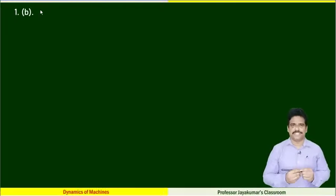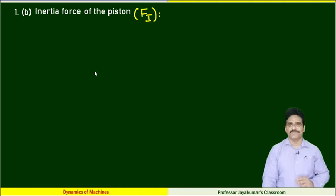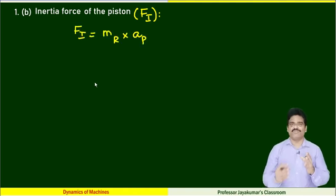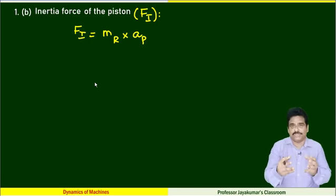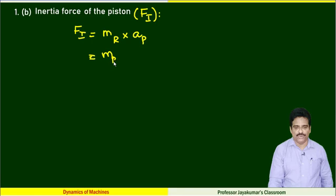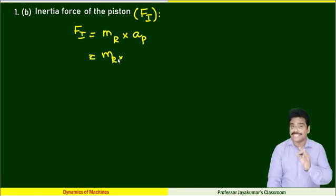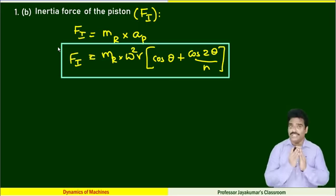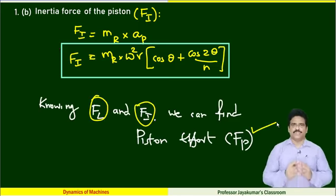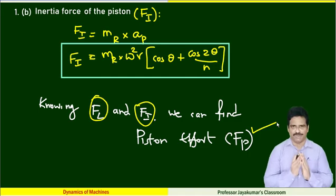Now let us determine inertia force of the piston. Inertia force equals MA — mass of the reciprocating parts multiplied by acceleration of the reciprocating parts, which is the acceleration of the piston. We already know the formula for acceleration of the piston, so we have the equation for inertia force. Now we can easily determine piston effort.